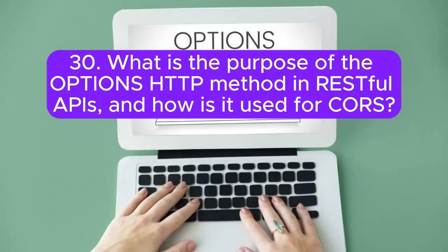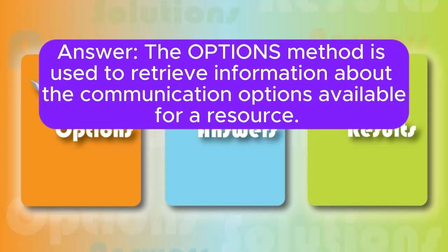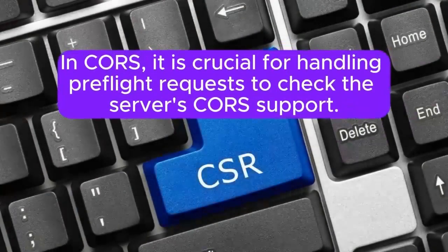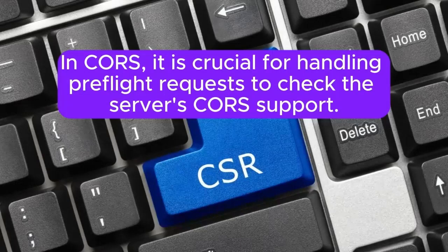Question 30: What is the purpose of the OPTIONS HTTP method in RESTful APIs, and how is it used for CORS? The OPTIONS method is used to retrieve information about the communication options available for a resource. In CORS, it is crucial for handling pre-flight requests to check the server's CORS support.